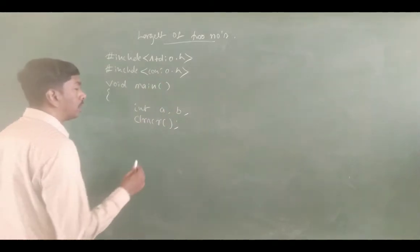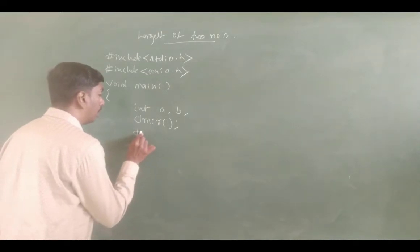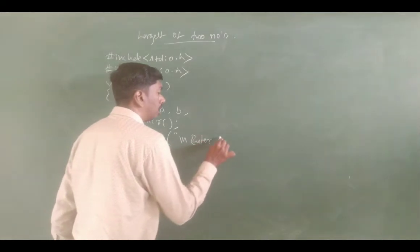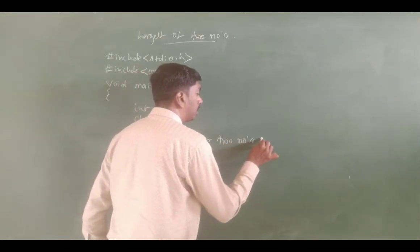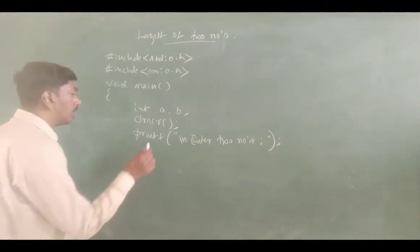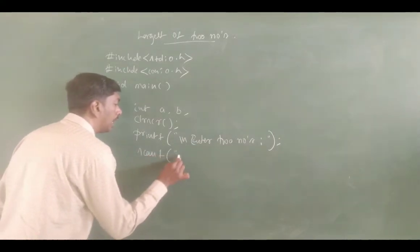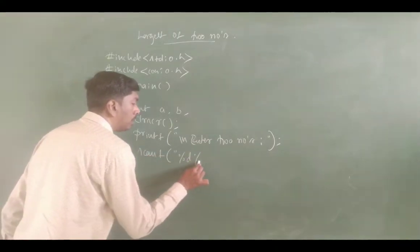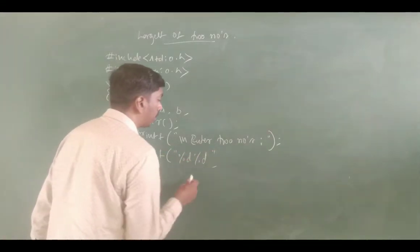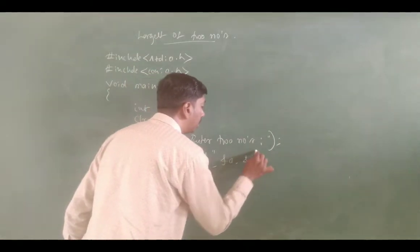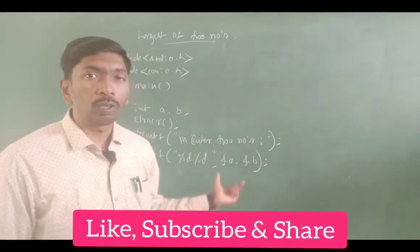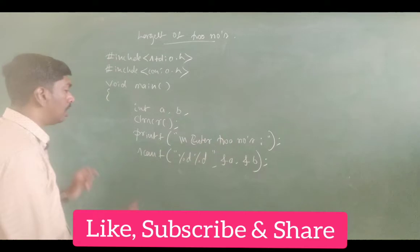Next, we have to accept the A and B values — we accept two numbers. So, printf with newline: 'Enter two numbers'. The user enters, for example, 10 or 20. We use scanf with %d, %d to read both values and store them in variables A and B in their respective memory blocks. Next, I will check the condition.